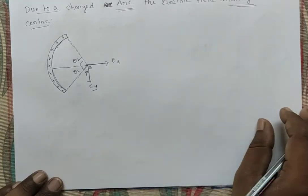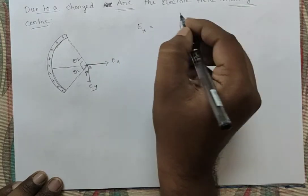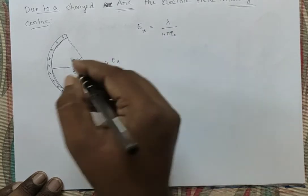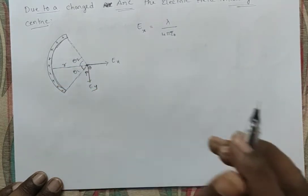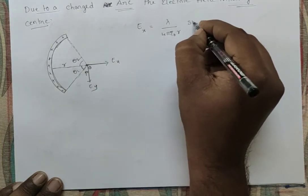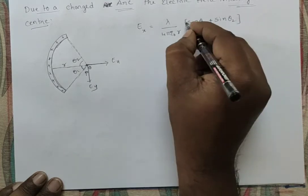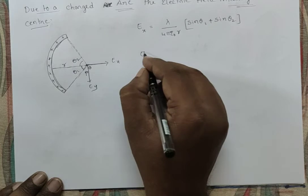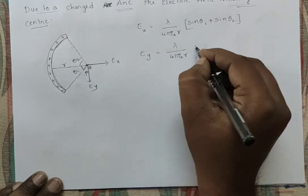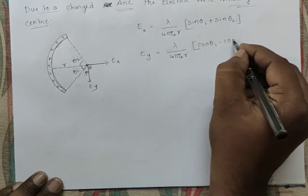The Ex expression is: Ex = (λ/4πε₀R) · (sin θ₁ + sin θ₂). Similarly, Ey = (λ/4πε₀R) · (cos θ₁ − cos θ₂).